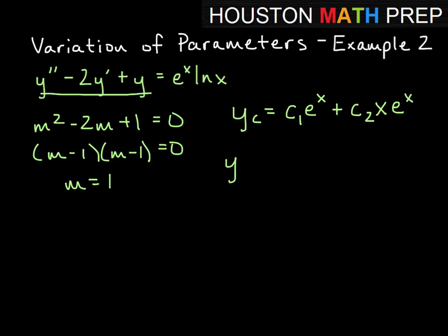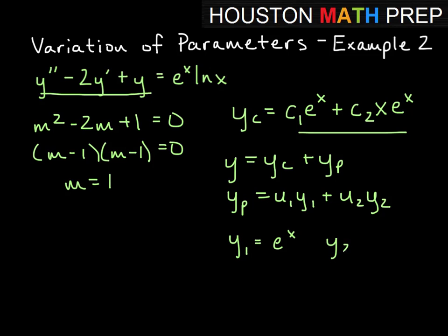And remember, our solution is going to equal this complementary function we just got plus y sub p. Remember y sub p is equal to u1 times y1 plus u2 times y2. Since we already have y sub c, we already know our y1 and our y2. From this form we can say y1 is going to be e to the x, and y2 is going to be x e to the x.